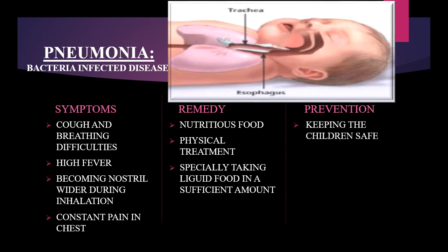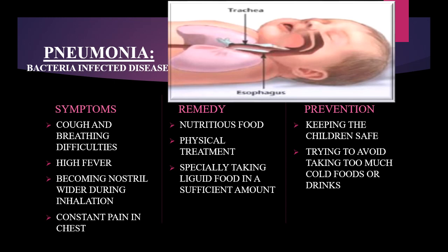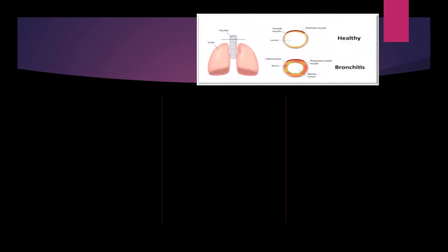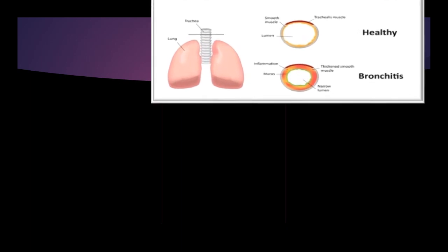Prevention of pneumonia includes keeping children safe and trying to avoid taking too much cold food or drinks. Now let's see the next disease. This picture shows that in this disease the trachea becomes narrowed down and mucus is stored in the pipeline of the trachea, which hinders the respiratory system. This disease is bronchitis.